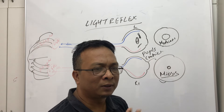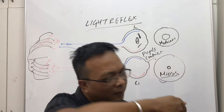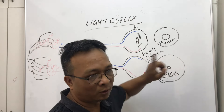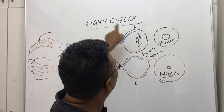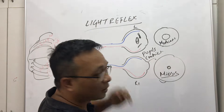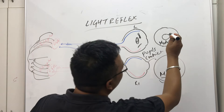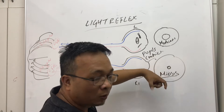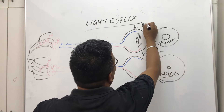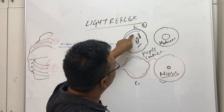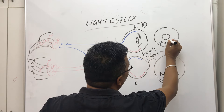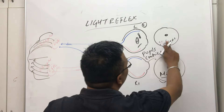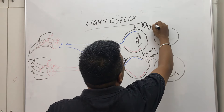This is why doctors often take a torch and put light on a patient's eye — or when the patient is unconscious we put light on their eye — to see whether this light reflex is present or not. When you put light on someone's eye you immediately see the pupil constrict; it becomes small. For example, when you put the torch on the left eye, the left pupil constricts immediately. This is called the direct light reflex.